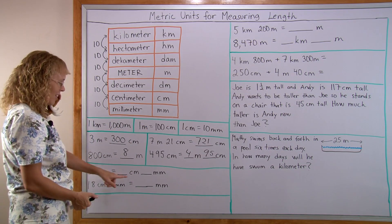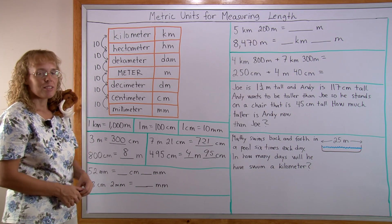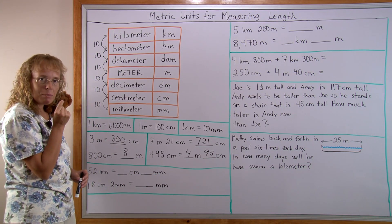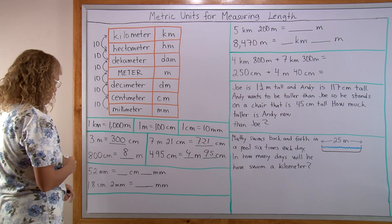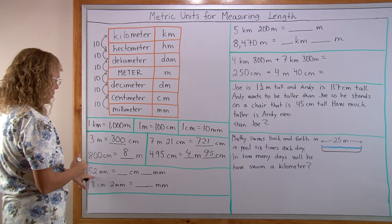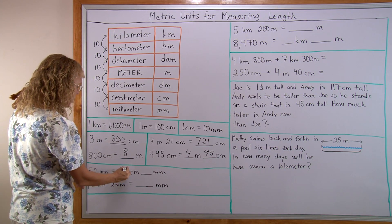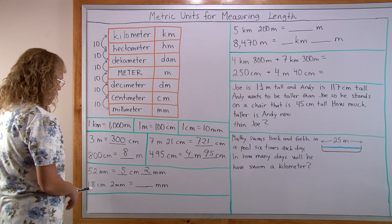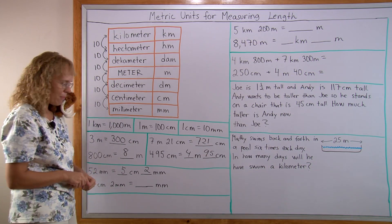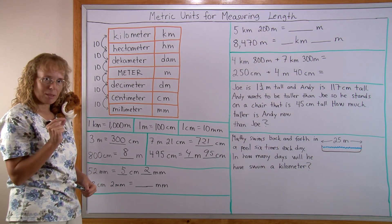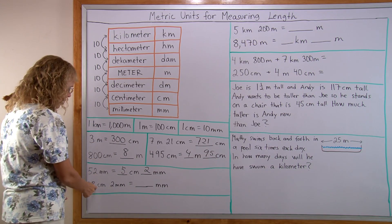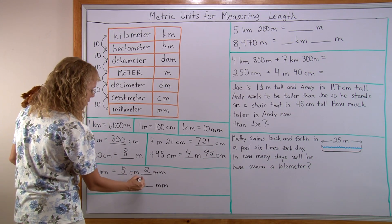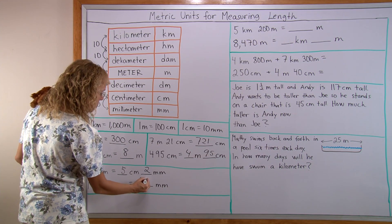52 millimeters — how many centimeters is it? 10 millimeters makes one centimeter, so 50 millimeters makes 5 centimeters and then 2 millimeters left over. And 18 centimeters 2 millimeters: 1 centimeter is 10 millimeters, so 18 times 10 is 180, plus 2 equals 182 millimeters.